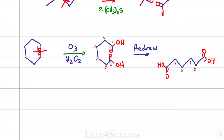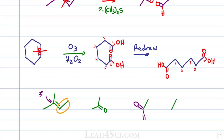Pay attention to the specific functional groups you get when you break that pi bond. A tri-substituted or tertiary carbon gives you a ketone under both oxidative and reductive conditions. A secondary carbon that breaks to become primary can give you an aldehyde or a carboxylic acid depending on whether you use reductive or oxidative conditions.